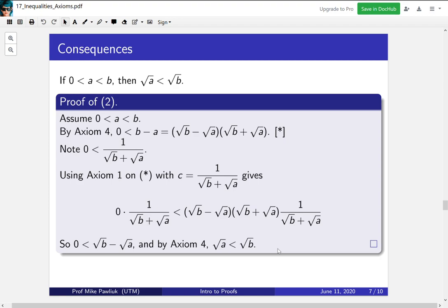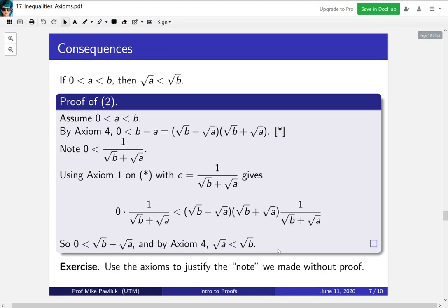Note that these two proofs are quite different in flavor, and they have a different main idea. Now for these proofs we should justify every single step using one of the axioms or one of the basic facts. But here we kind of snuck in a little thing. We just said note that this is true, but this should be justified using the axioms. So as an exercise go through and justify why is this positive from everything we know already.